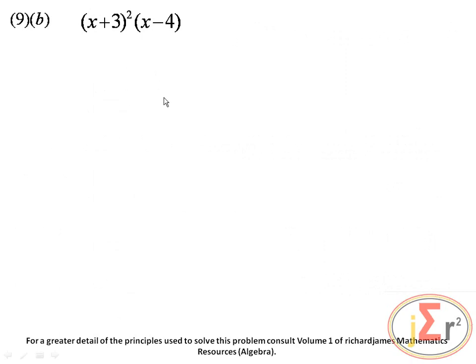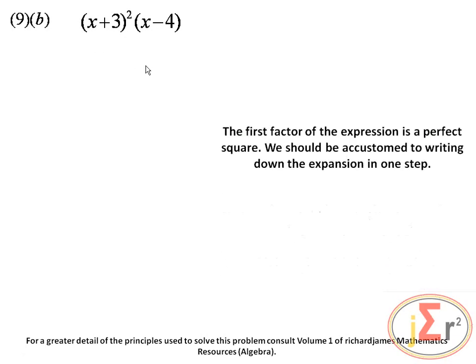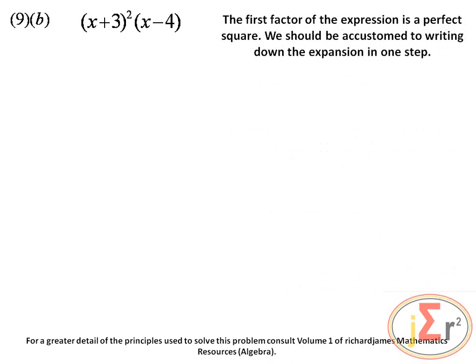We are expected to expand (x plus 3) all squared multiplied by (x minus 4). The biggest mistake students make is writing x squared plus 9 when expanding (x plus 3) squared, totally neglecting the middle term which is 2 times x times 3 equals 6x. The first factor is a perfect square and we should write its expansion in one step at CSEC level.